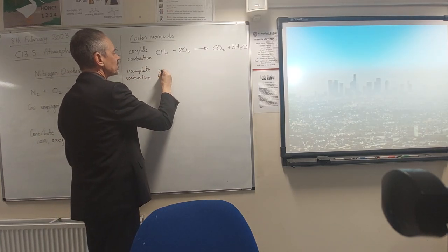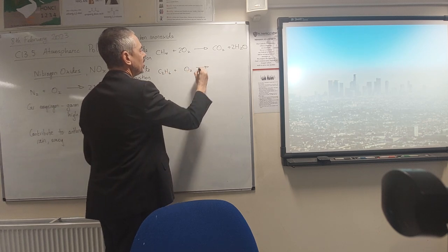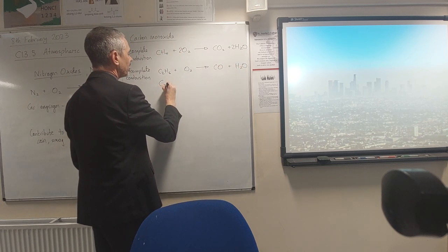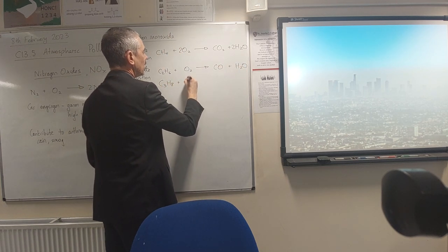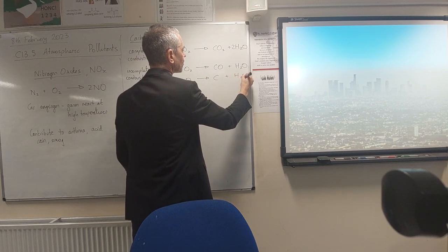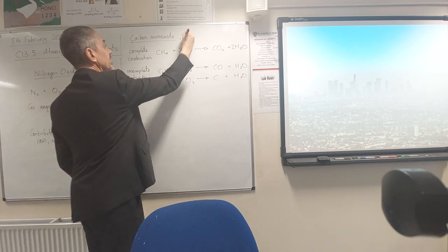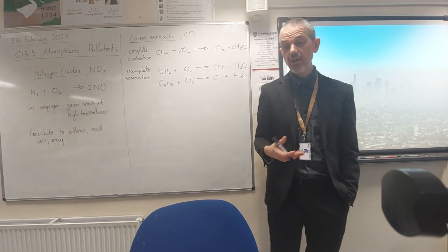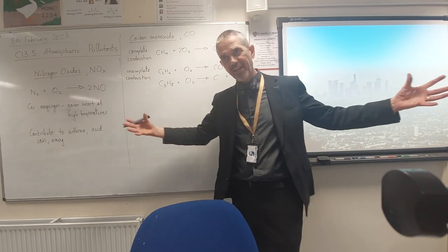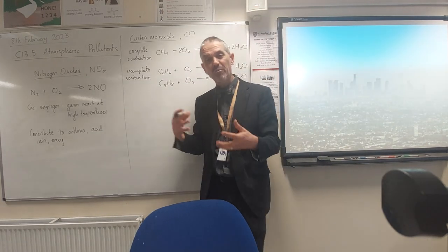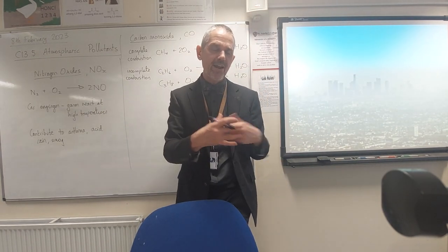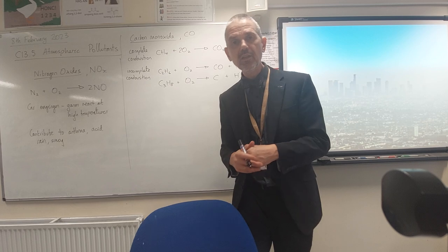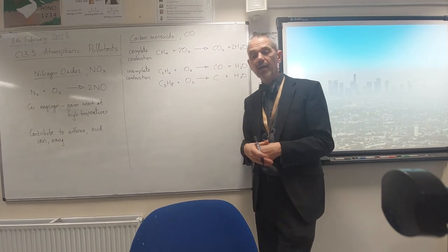With incomplete combustion we have some options: we can get carbon monoxide - we always get water - or we could have just carbon. Carbon monoxide can be produced any time you don't have enough oxygen to burn all the fuel. In a car, even with a turbo - one of those little fans that pushes more air into the engine - it's still very difficult to get enough air to burn all the fuel. So carbon monoxide is an inevitable product of car engines.